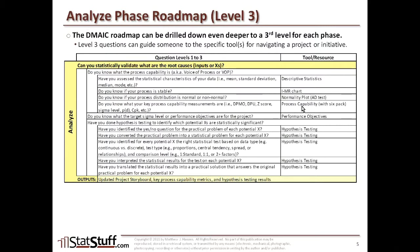In Minitab, the process capability six-pack provides those key metrics to figure out process capability. By answering all these things, you should be able to answer the level two question and know your true voice of the process. Personally, I prefer to include process capability in the analyze phase rather than the measure phase — using the measure phase to identify, select, and validate reliable data, then exclusively using the analyze phase for actual analysis. Some folks may include process capability in an earlier phase, and that's a valid difference of opinion.